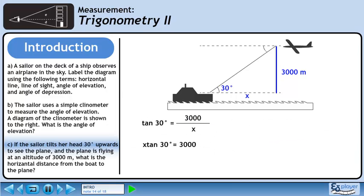Cross multiply. Divide both sides by tan 30 to isolate x. Now we have x by itself. This evaluates to 5196 meters.